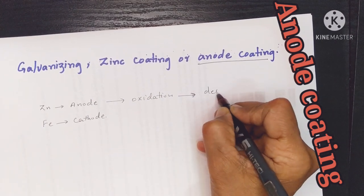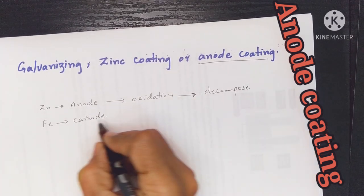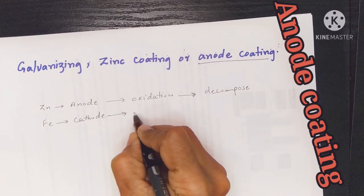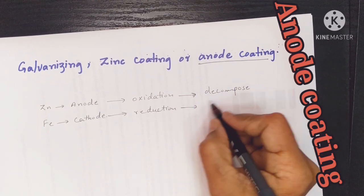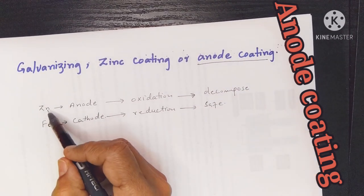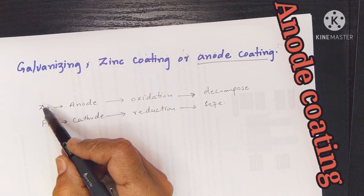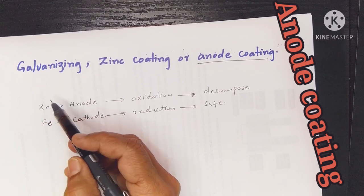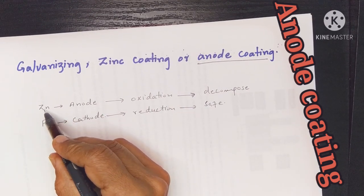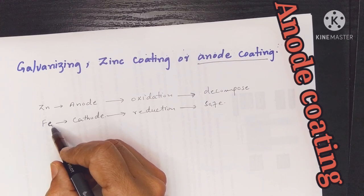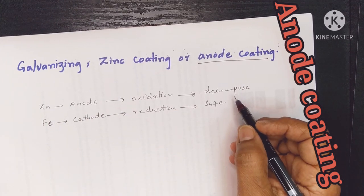The metal of zinc is decomposed and corrodes, while at the cathode, iron is protected by reduction and remains safe. When the zinc coating layer is damaged, the galvanic cell still causes zinc to decompose and iron to remain safe. We call this sacrificial corrosion.